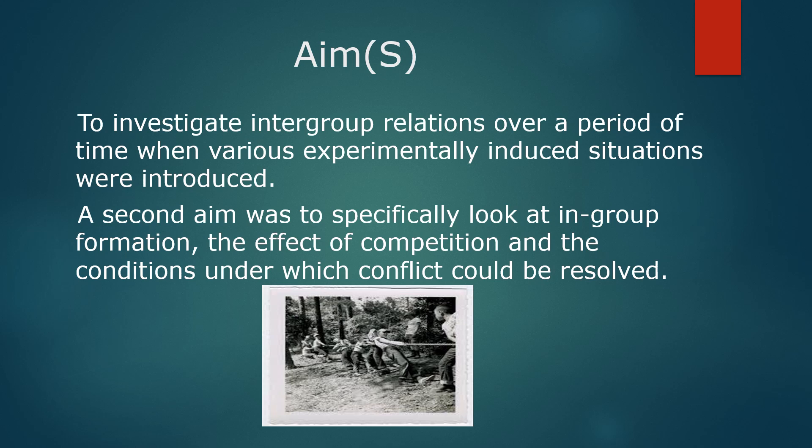So Sheriff had two main aims. He wanted, first of all, to investigate how intergroup relations would form over a particular period of time, and he induced various situations to trigger intergroup conflict between his participants. The second aim was to look at the way in which in-groups formed through realistic conflict — the effect of competition and whether competition over material or finite resources would instigate realistic conflict, and also to see if he could reduce those conditions of conflict using what he called superordinate goals.